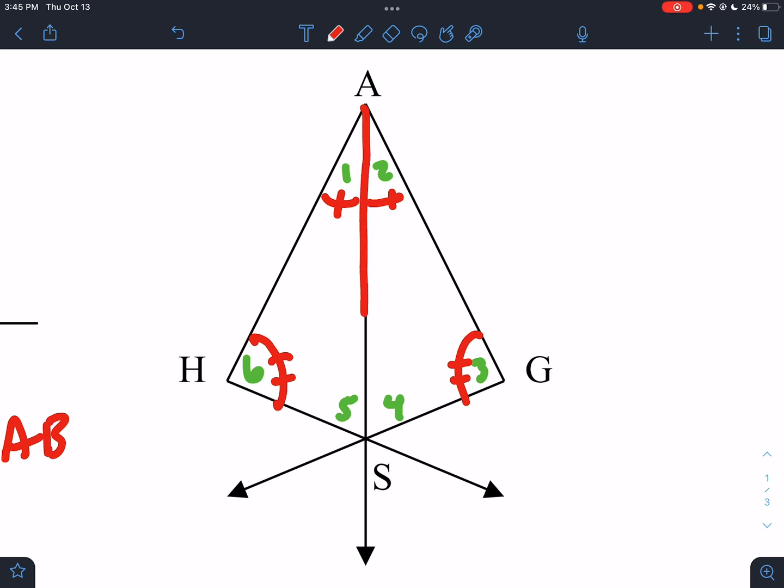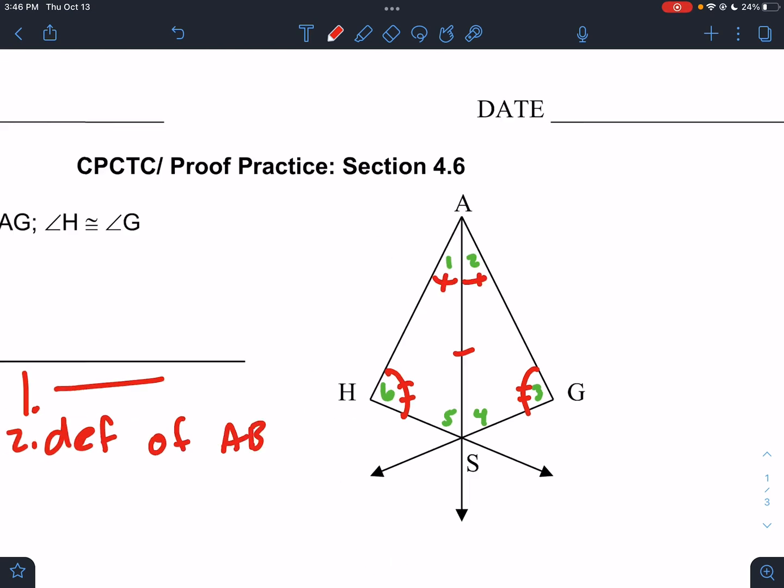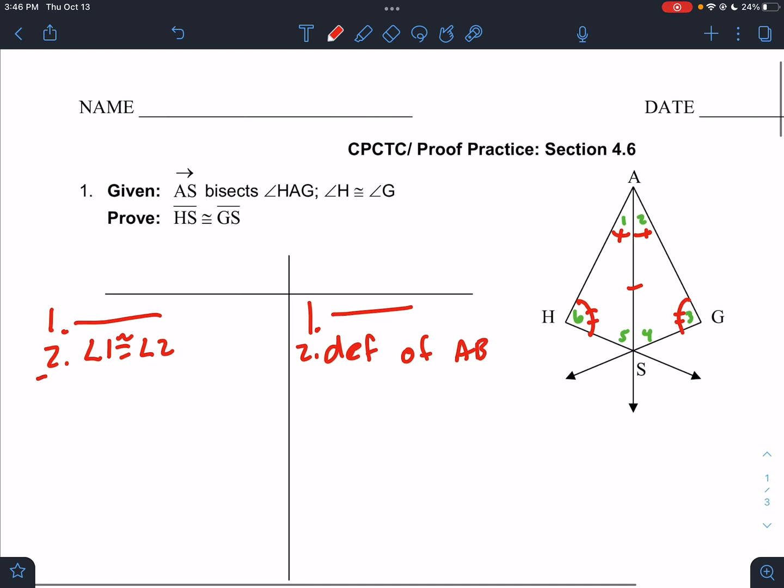We know that both triangles use the side AS. It's called a shared side. If this was length 10, that means both triangles would have a side that has length 10. So it is the same size for both triangles. I'm going to put a mark on it just so I can kind of see it. But in our proof, we have to get that in there. We have to say that AS is congruent to AS.